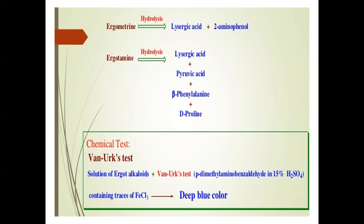For the chemical test, ergot contains indole alkaloids so it answers the Van Urk test. The solution of ergot alkaloids is treated with Van Urk reagent — which is composed of para-dimethylaminobenzaldehyde — and it gives a deep blue color. This test is called the Van Urk test.